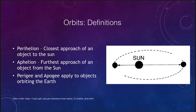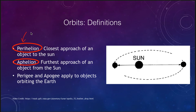Let's start with a few definitions. Perihelion is the closest approach of an object to the Sun. Aphelion is the furthest approach of an object from the Sun. You may have also heard perigee and apogee — they're very similar. The prefix 'peri' refers to close and 'ap' refers to far. 'Helio' refers to the Sun, so perihelion is the closest approach of an object to the Sun.